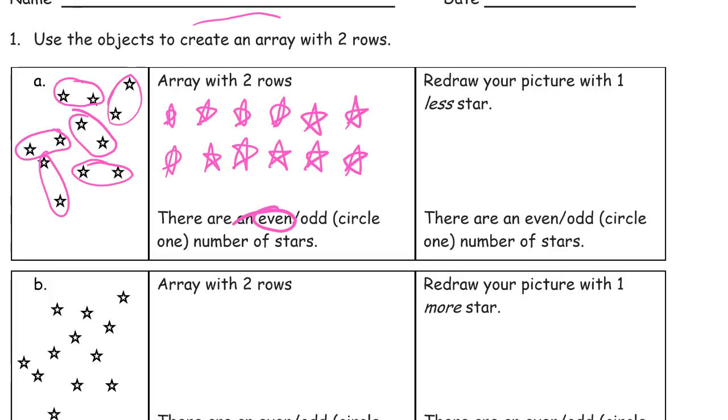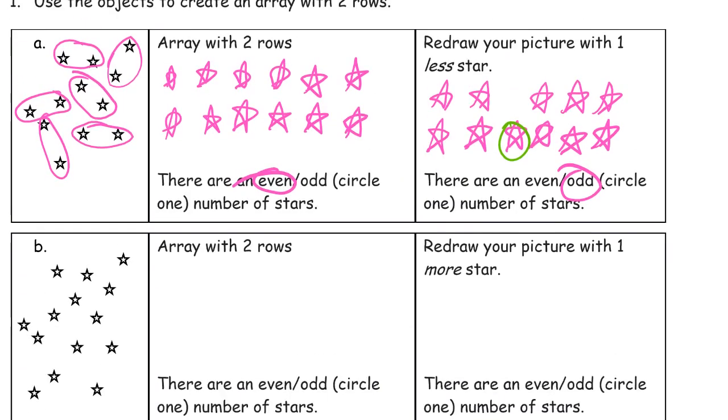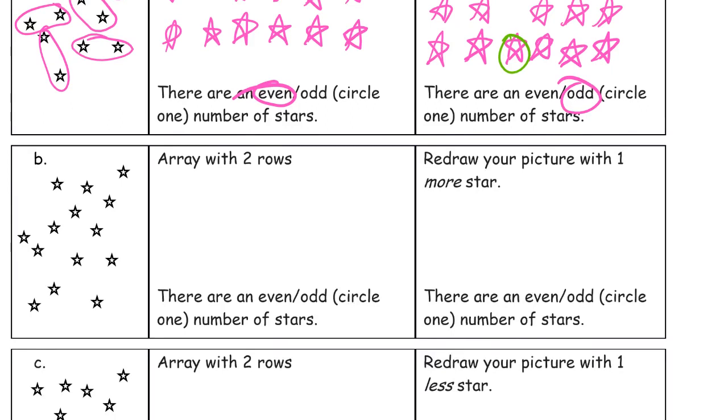Redraw your picture with one less star. Now, you can't have an array, but I'm still going to draw an array with one missing. And usually we leave them off on the end, but I'm going to just be goofy and leave one out of the middle. But just one. And you can see there's an odd number of stars because this guy here is kind of left out. He doesn't have a column of 1. And the others are in columns of 2.